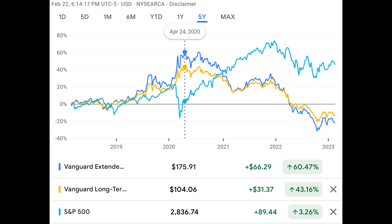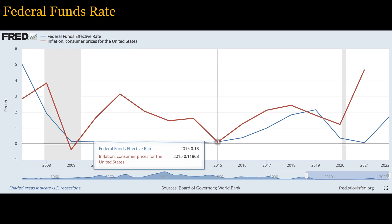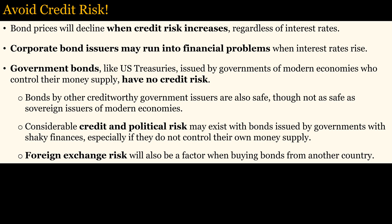A good investment strategy is to buy EDV when interest rates peak. Even if interest rates do not drop to zero, you will still earn good capital gains along with interest while holding the security. When interest rates look like they have bottomed, sell EDV and buy stocks, since stocks do better in a low interest rate environment. If you think it unlikely that the Fed funds rate will drop near zero — below 0.25% — consider that it has dropped below that rate three times since 2009. Avoid credit risk: corporate bond issuers may run into financial problems when interest rates rise, reducing capital gains potential or causing losses. Government bonds like U.S. Treasuries, issued by modern governments who control their own money supply, have no credit risk and are the safest investment.